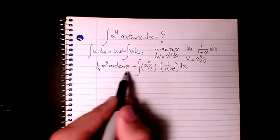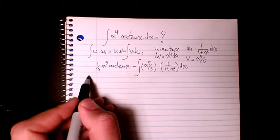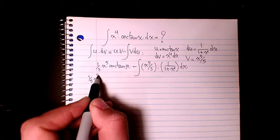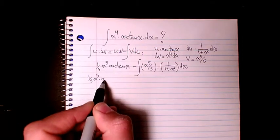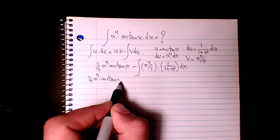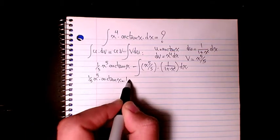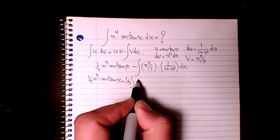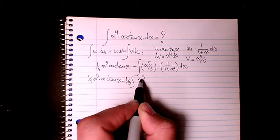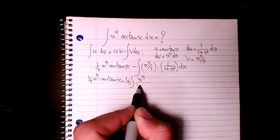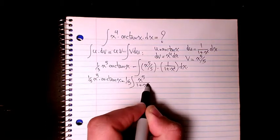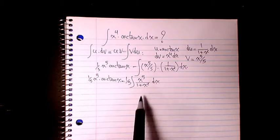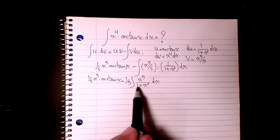We can simplify: it's going to be (1/5) x to the power of 5 arctan(x) minus (1/5) times the integral of x to the power of 5 divided by (1 plus x squared) dx.